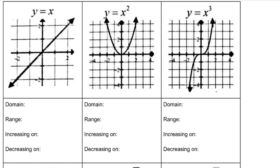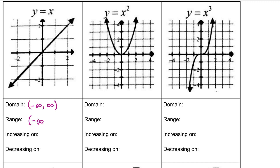Our first function is y = x. Looking at the domain from left to right, it continues toward negative infinity, and this line continues forever as x approaches positive infinity. We will always put parentheses around infinity because you cannot include infinity — it's not a number, it's a concept or more of a direction. The range for y = x is all the y values being used, going from negative infinity all the way up to positive infinity.